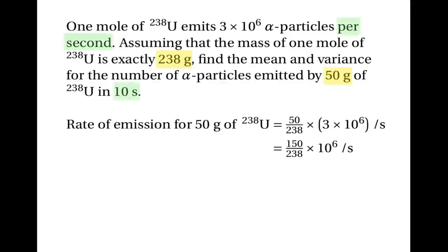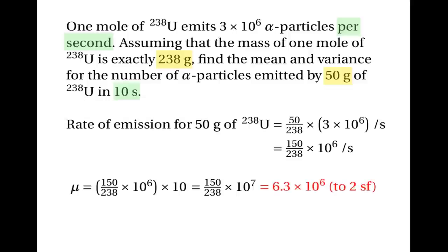This is the rate of emission per second, and we're interested in an interval of 10 seconds. So the mean number of emissions in a 10-second period will be this number times 10: 150/238 × 10⁶ × 10, which is 150/238 × 10⁷, which is about 6.3 × 10⁶. I've given the answer to two significant figures because the information in the question seemed fairly approximate. The variance for the number of emissions will be the same — also 6.3 × 10⁶.